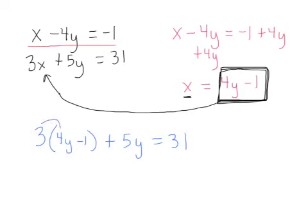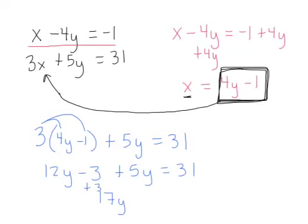So I'm going to distribute the 3, and so I have 12y minus 3 plus 5y equals 31. And now I'll combine like terms. 12y plus 5y is? 17y. And at the same time, I'm going to add 3 on both sides. Say add 3. So I have 17y equals 34.